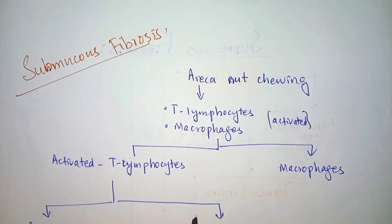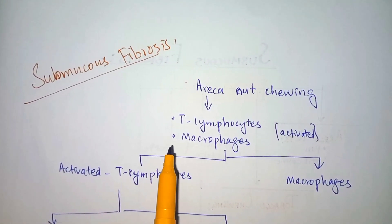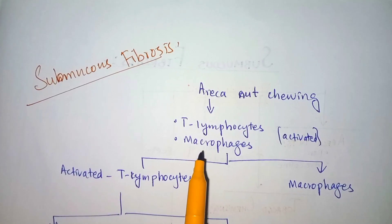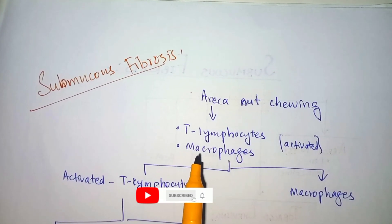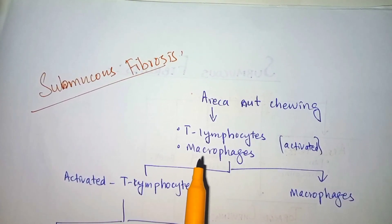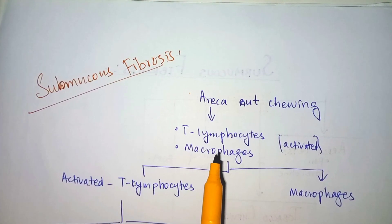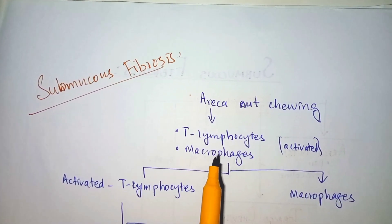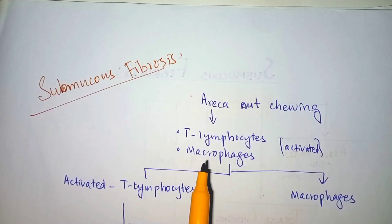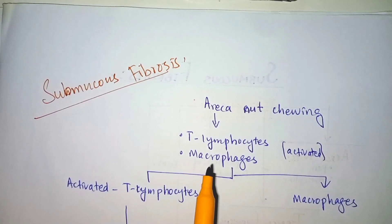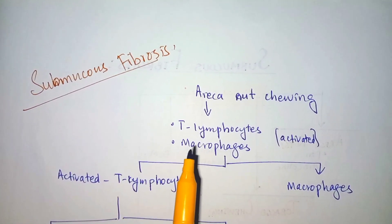Oral submucous fibrosis is the deposition of fibrous tissue in the oral cavity and the pharynx, due to the fibroelastic transformation of the connective tissue in the lamina propria, which mostly results in epithelial atrophy and often the formation of vesicles in the oral cavity. The habit of betel nut chewing, drinking, or smoking tobacco, coupled with dietary deficiency, are the causes of submucous fibrosis.